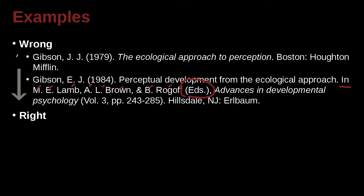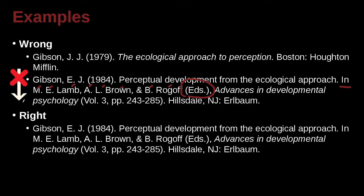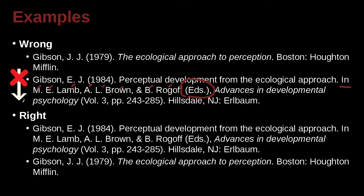What's wrong with the ordering here? We've got Gibson, J.J. and Gibson, E.J. And of course, E comes before J. So E.J. would be first in order, and J.J. would be second in order.